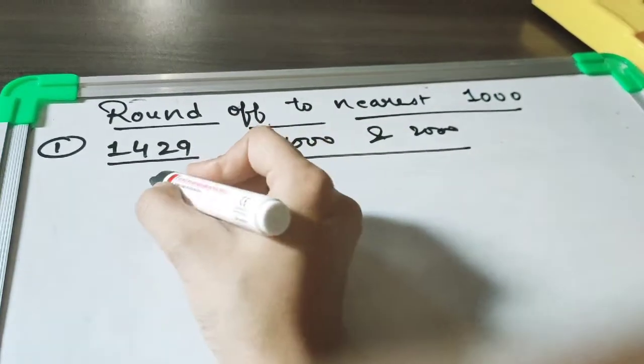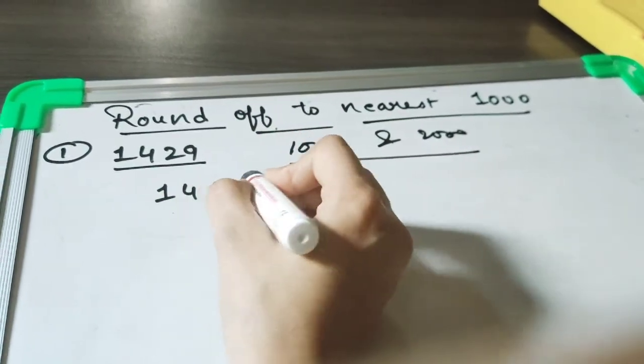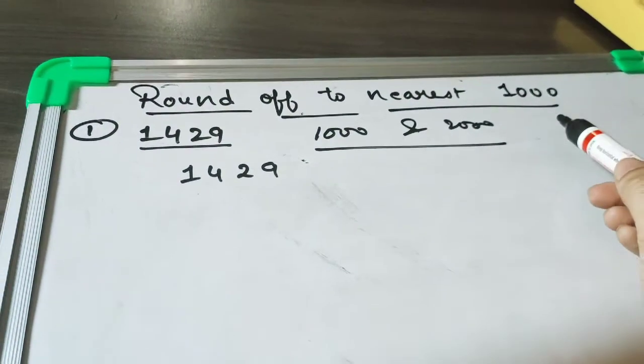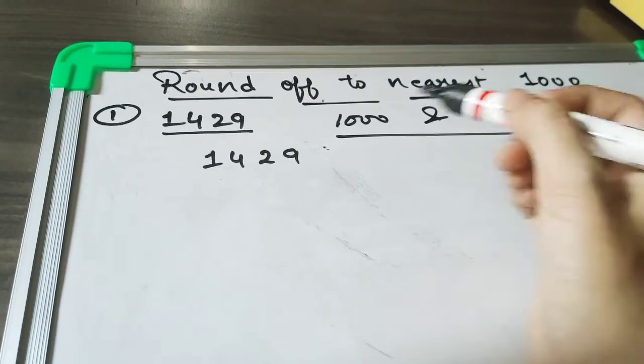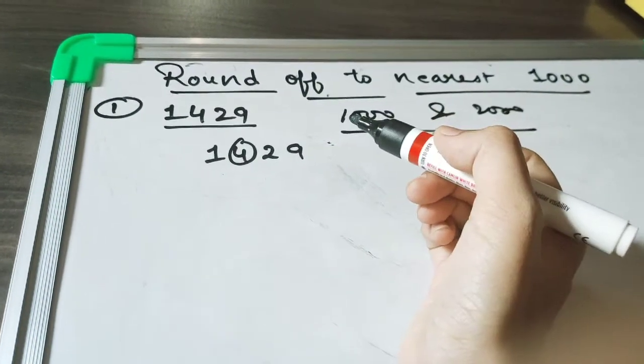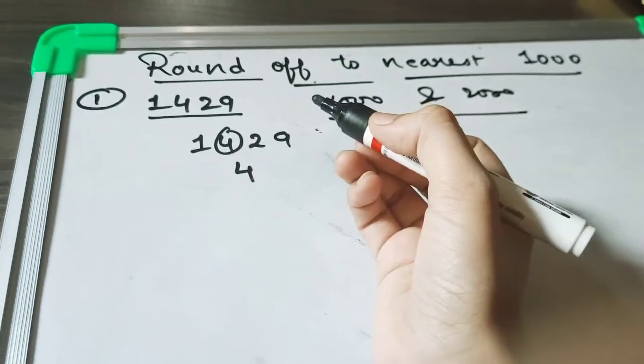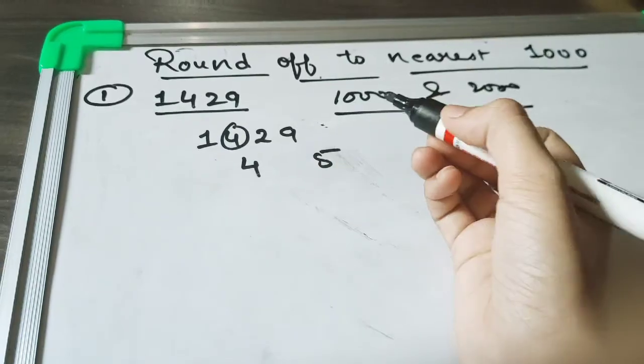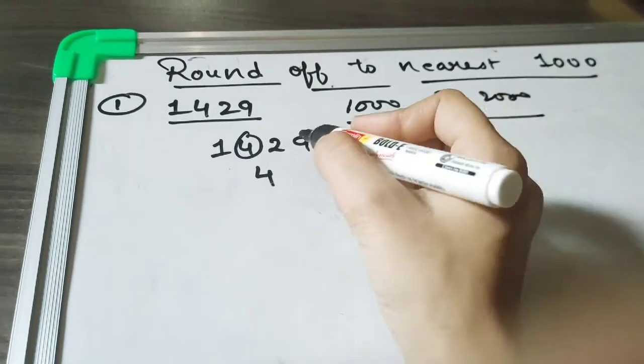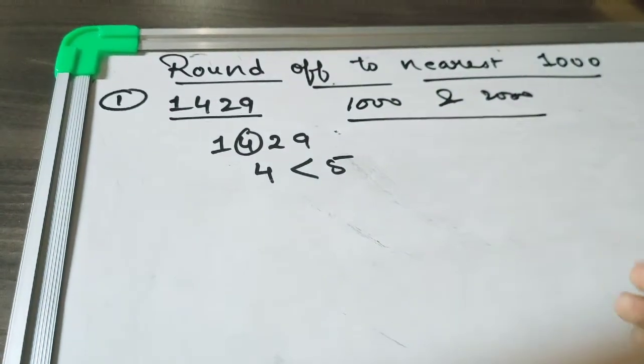For rounding, we have to check 1429. When we are rounding to the nearest thousand, remember that we have to check the hundreds place. In the hundreds place there is 4. So, is 4 less than 5 or greater than 5? This is less than 5.